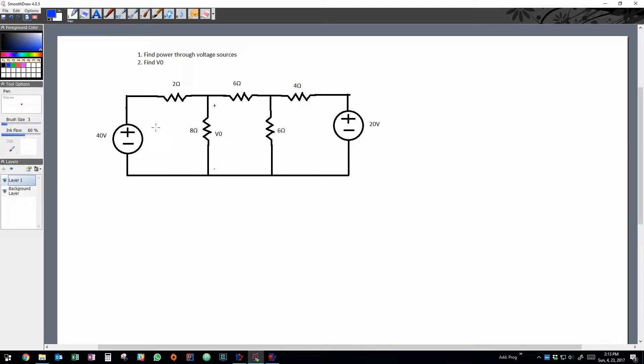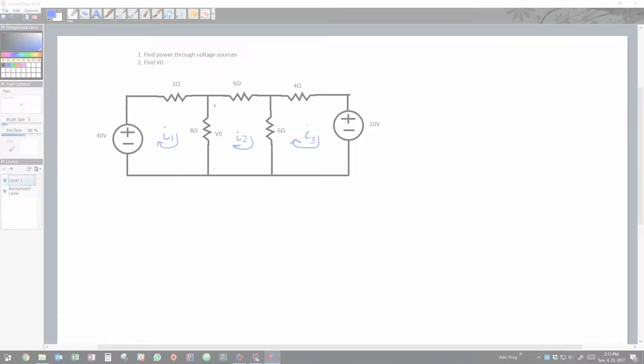So you can draw your mesh currents either clockwise or counterclockwise, whichever way you want, and label them counting from one all the way up until how many loops you have. So here we have i1, i2, i3.